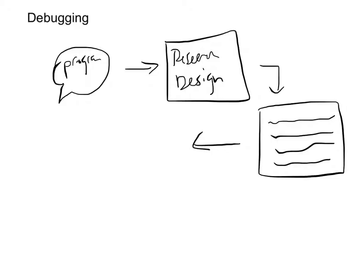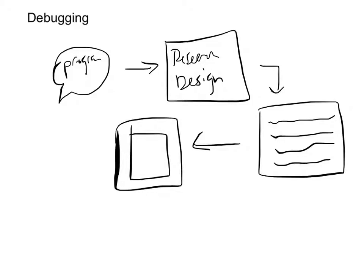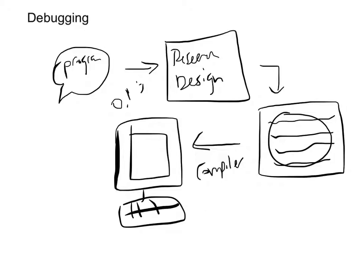Then you actually write the code. Once you write the code, you compile the code. So the compiler takes your code and turns it into machine code, because obviously the computer needs to understand what you've written, and computers only understand zeros and ones — that's essentially machine code. So what the compiler does is it takes your code and turns it into machine code so that the computer can understand. Once you've done that, you can run the program.